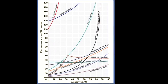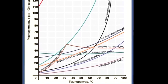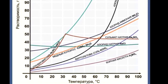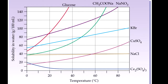Different salts have their own solubility curves. A solubility curve is a measure of how many grams of the salt can be dissolved in 100 ml of water at a certain temperature. Also, for all of the salts, the information is different.